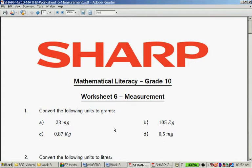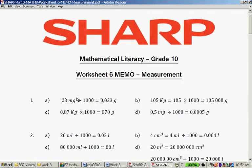Milli means a thousand and so does kilogram. But milli means one thousandth. So there's a thousand milligrams in a gram and a thousand grams in a kilogram. To go from milligram to gram, divide by a thousand. From kilograms to gram, multiply by a thousand. So 23 milligrams divided by 1000 is 0.023 grams. 105 kilograms times 1000 is 105,000 grams. 0.85 kilograms times 1000 is 870 grams. And 0.5 milligrams divided by 1000 is 0.0005 grams.